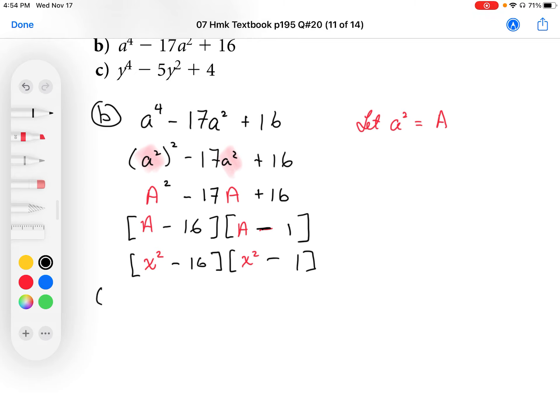So factoring this down as a difference of squares, we get x plus 4, x minus 4. And just highlighting this here, this portion here generates that factor. And for the next part here, this x squared minus 1, we can factor to x plus 1, x minus 1. And this portion here is going to give us these factors here.